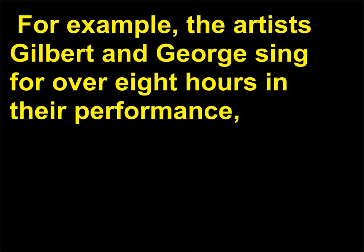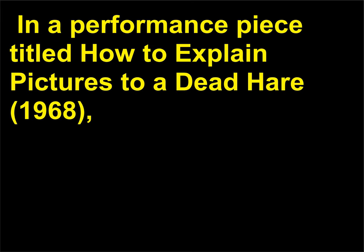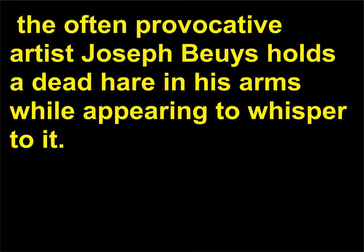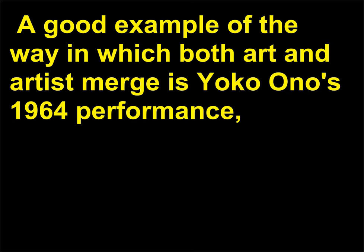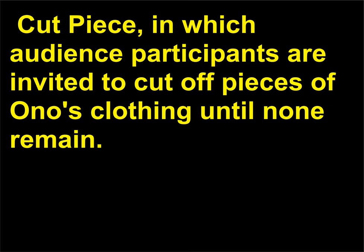For example, the artists Gilbert and George sang for over eight hours in their performance The Singing Sculpture (1969). In a performance piece titled How to Explain Pictures to a Dead Hare (1968), the often provocative artist Joseph Beuys holds a dead hare in his arms while appearing to whisper to it. A good example of the way art and artist merge is Yoko Ono's 1964 performance Cut Piece, in which audience participants are invited to cut off pieces of Ono's clothing until none remain. This performance is also categorized as an example of Fluxus art.